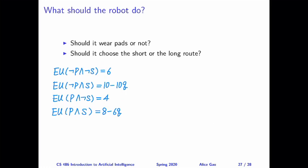Now we're ready to answer the final question: what should the robot do — wear pads or not, short route or long? At first glance it's not clear, because some expressions involve Q, which can be any number from 0 to 1. However, wearing pads and choosing the long route is strictly dominated by not wearing pads and choosing the long route — since no accident can happen on the long route, there's no point wearing pads to reduce damage that can't occur.